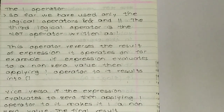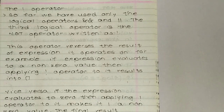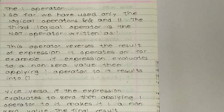The NOT operator is used when we don't want any condition to be satisfied. So far we have used only the logical operators AND and OR. The third logical operator is the NOT operator, written like an exclamatory mark.